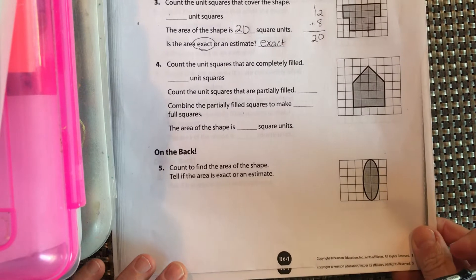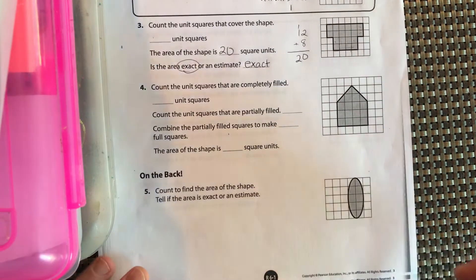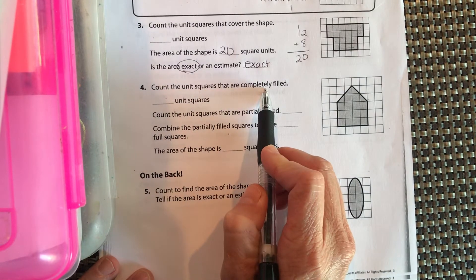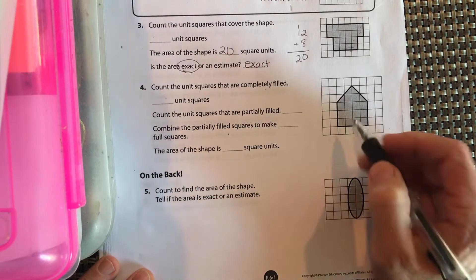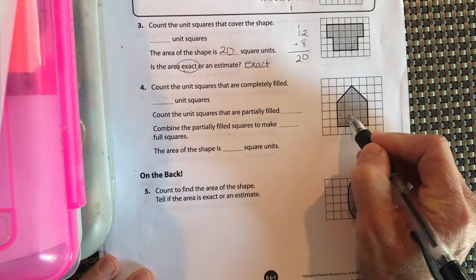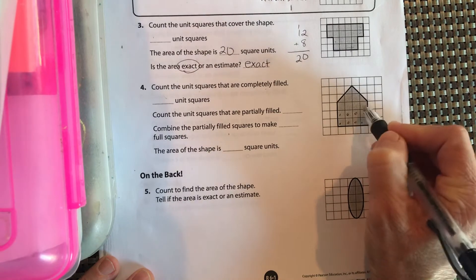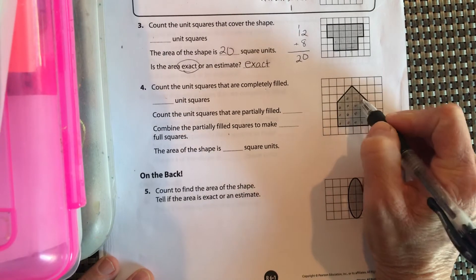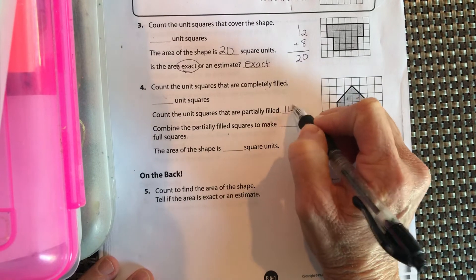Okay, let's look at this one. Count the unit squares that are completely filled. Okay, so we have 1, 2, 3, 4, 5, 6, 7, 8, 9, 10, 11, 12, 13, 14. So that's 14.